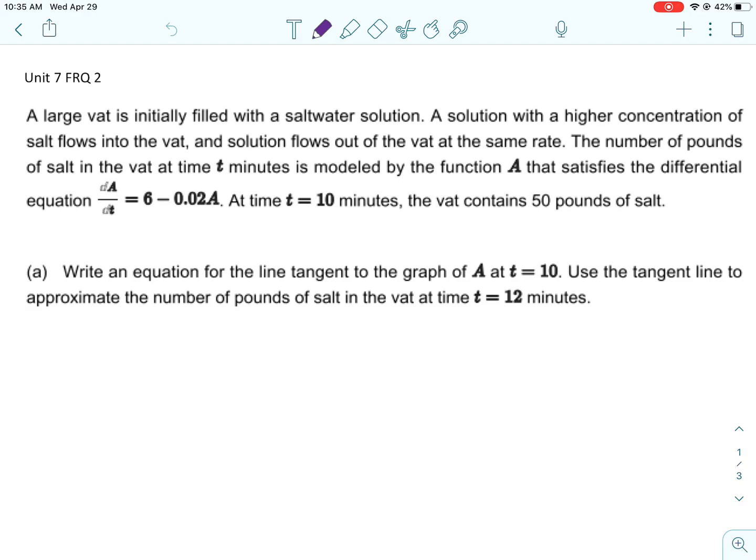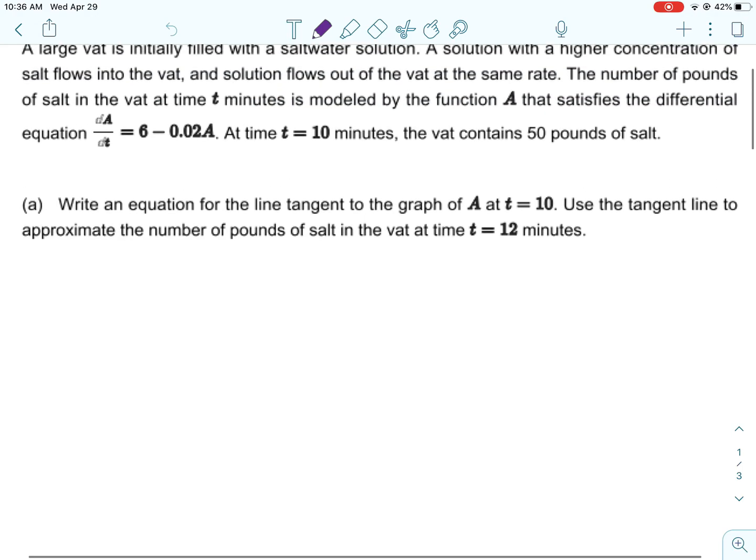This second free response question from Unit 7 has an actual situation going with it. We have a large vat is initially filled with a saltwater solution. The solution with a higher concentration of salt flows into the vat and solution flows out of the vat at the same rate. The number of pounds of salt in the vat at time t minutes is modeled by the function A that satisfies the differential equation dA/dt equals 6 minus 0.02A. At time t equals 10 minutes, the vat contains 50 pounds of salt.